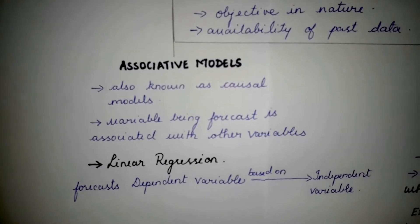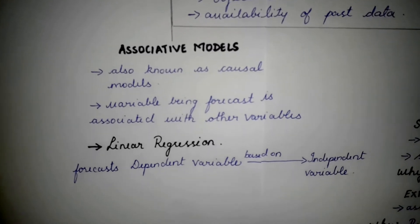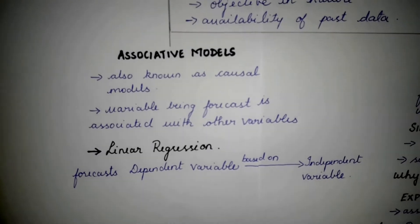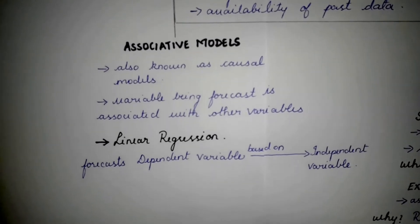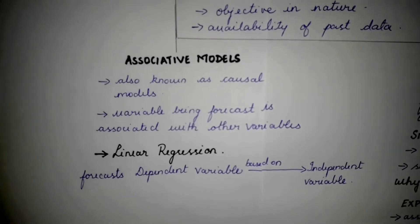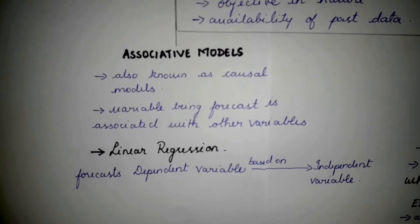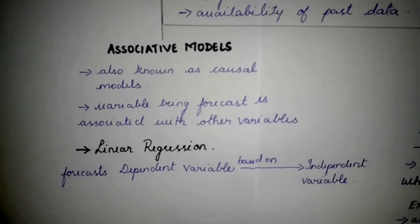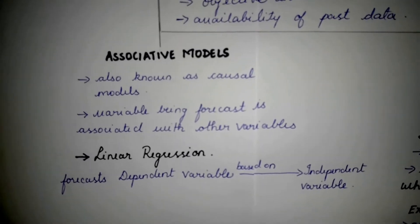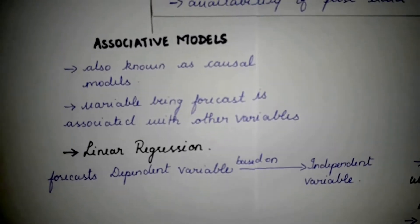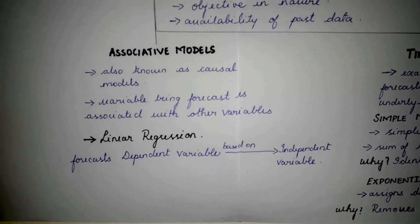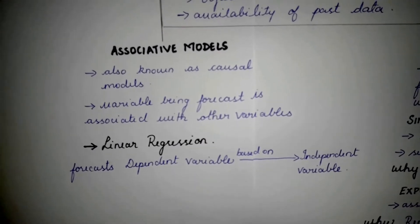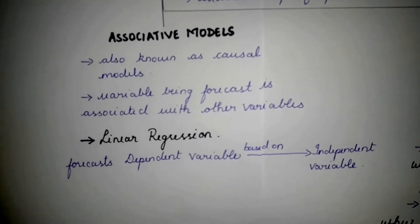Associative models are also known as causal models. This model assumes that the variable to be forecast is associated with other variables of the event. One technique under associative models is linear regression, in which a dependent variable is forecasted based on the values of the independent variable. According to associative models, the variable to be forecasted largely depends on other variables associated with it.